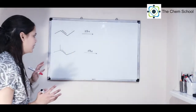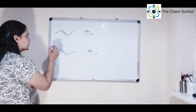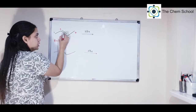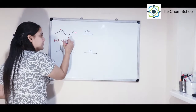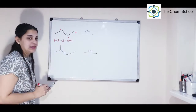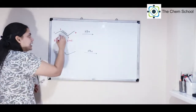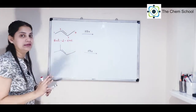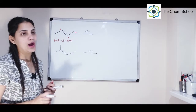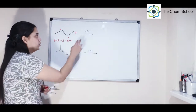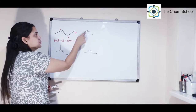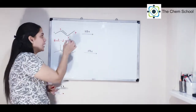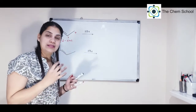To understand Markovnikov's rule smoothly and easily, I have taken two examples. Let's write the name for the first one. It has one, two, three, and four carbons, so it is butane. On the second carbon you have a double bond, so it is but-2-ene. Because it is an alkene you will use the suffix 'ene'. If you cut it in between, you get two equal parts, so this is a symmetrical alkene. Now when you add HBr, it will get added across this double bond. This is an electrophilic addition reaction.